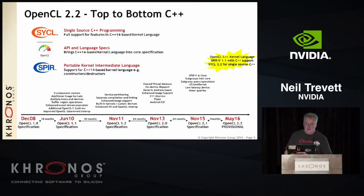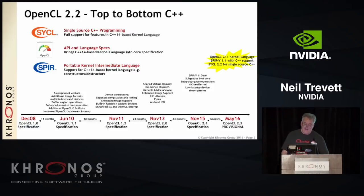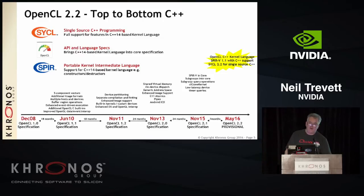OpenCL 2.2 includes not just the OpenCL API but also the definition of OpenCL C and OpenCL C++. SPIR-V is the intermediate representation that Khronos defines — it's like LLVM for GPUs. SYCL is a single-source programming framework: you can write a single source file containing both CPU and GPU code using standard C++14, with no additions to the language, and the SYCL system figures out how to accelerate your code.